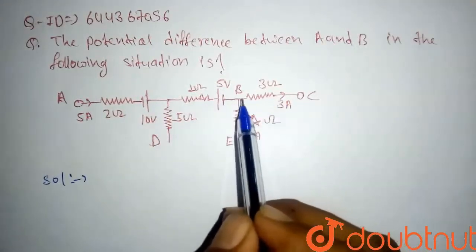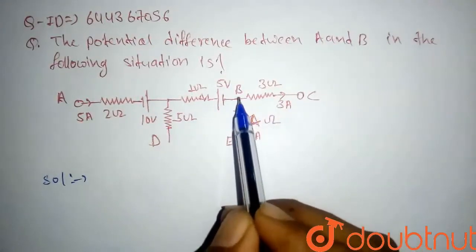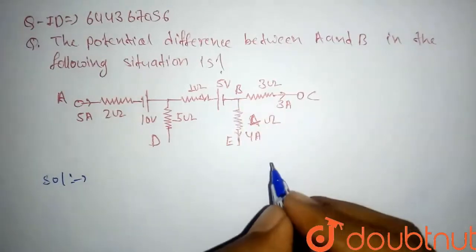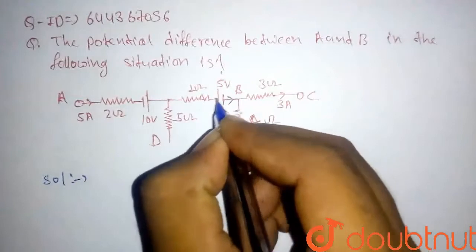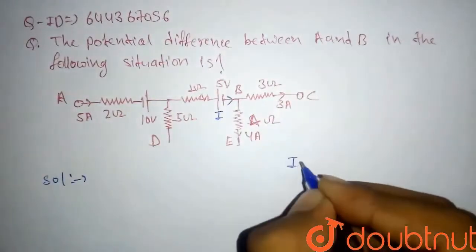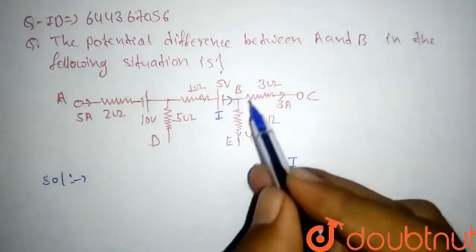So we have current in this branch as B to C 3 ampere and B to D is 4 ampere. So here we will apply node analysis. So assume that the current coming through this branch is I. So this is incoming current and this is outgoing current.